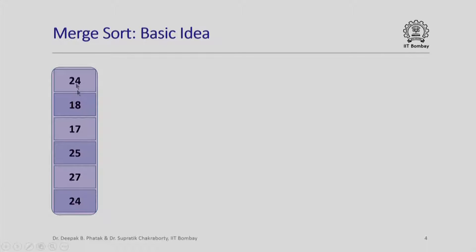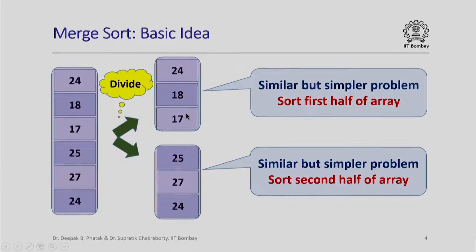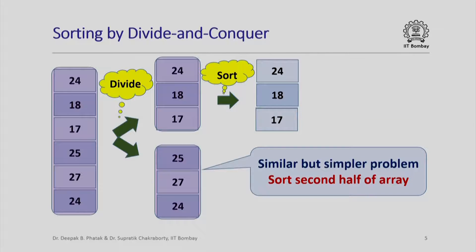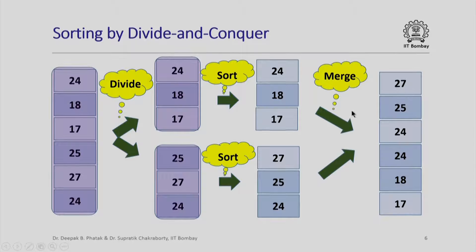Let us quickly recall the basic idea behind merge sort. We are given an unsorted array of integers. We first divide it into two subproblems of almost the same size — if the original size was n, each subproblem is roughly n/2. Then we sort the first half and the second half separately, and after sorting them we take these two sorted subarrays and merge them together into one larger sorted array containing all the elements of the original array.